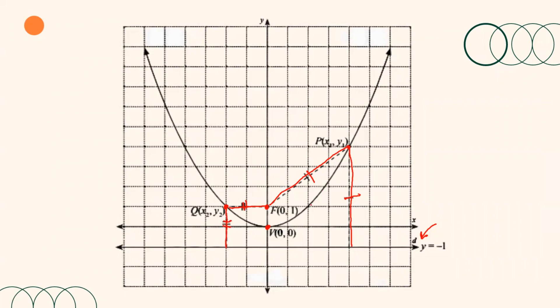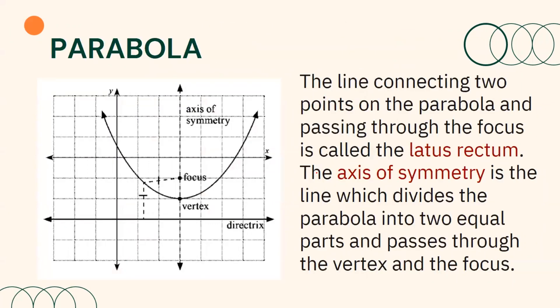Using infinitely many points on the parabola and measuring their distances from the focus and from the directrix, it can be noted that each point has the same distances from them. Aside from the vertex, focus, and directrix, other important elements of a parabola are the latus rectum and axis of symmetry. The line connecting two points on the parabola and passing through the focus is called the latus rectum. The axis of symmetry is the line which divides the parabola into two equal parts and passes through the vertex and the focus.